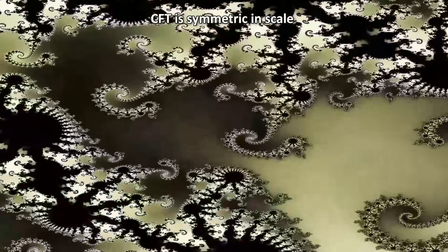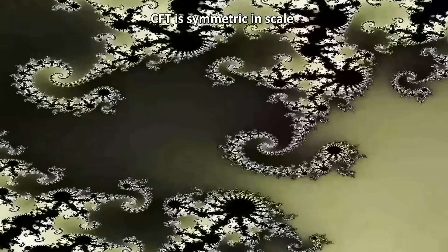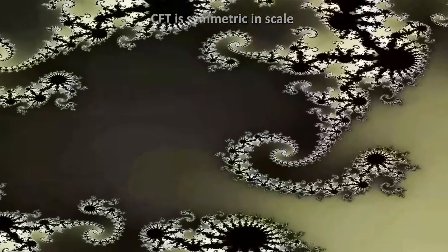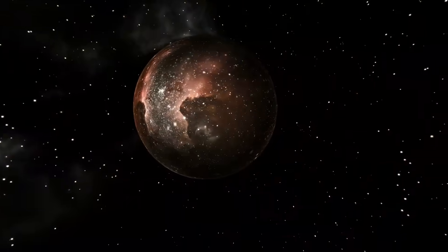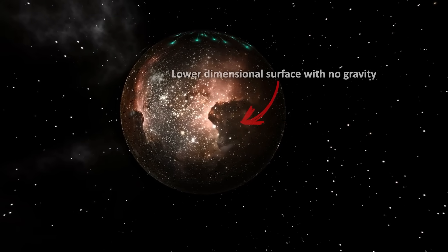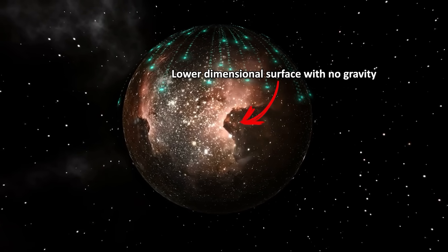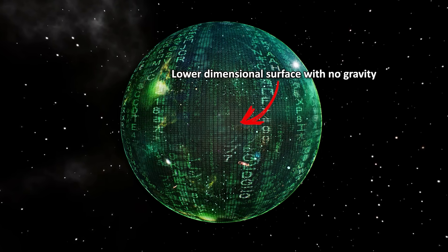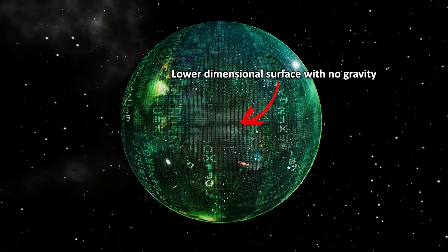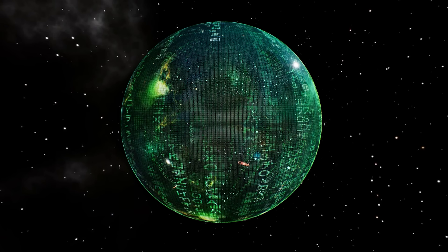Conformal basically means the laws in the theory look the same even if you stretch or rescale things. It's symmetric in scale, something like a repeating fractal pattern. But you don't need to worry about the exact definition. Just remember that CFT is a set of rules for physics living on a lower dimensional surface. But crucial to this is that the CFT has no gravity in it. It's more like a flat world's physics.